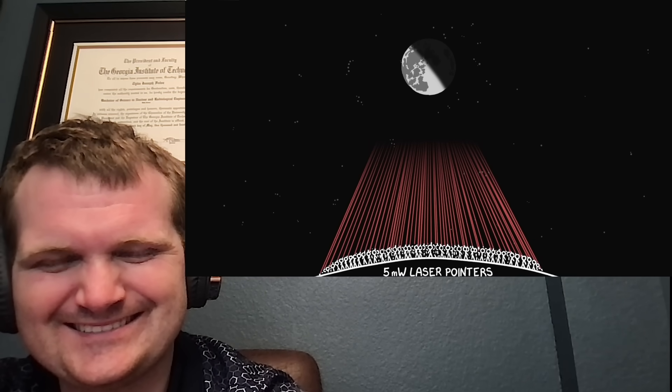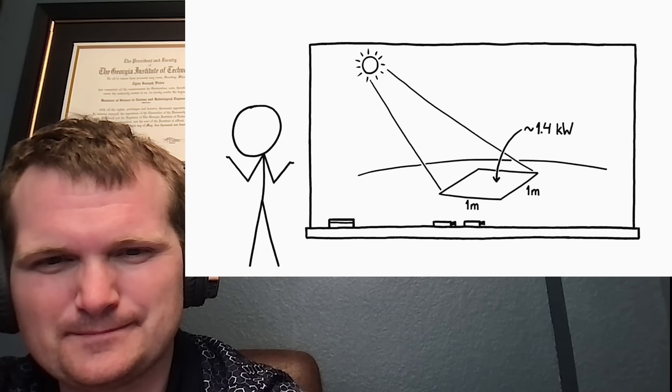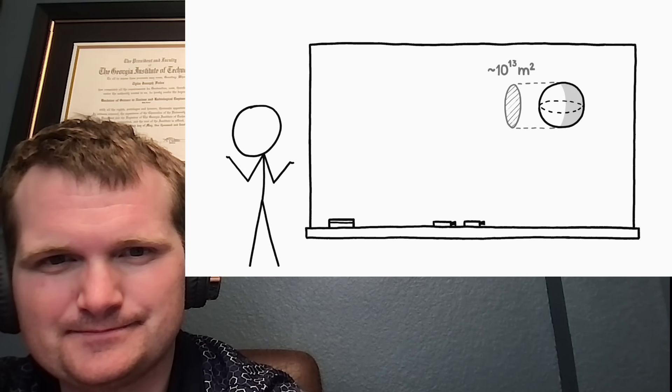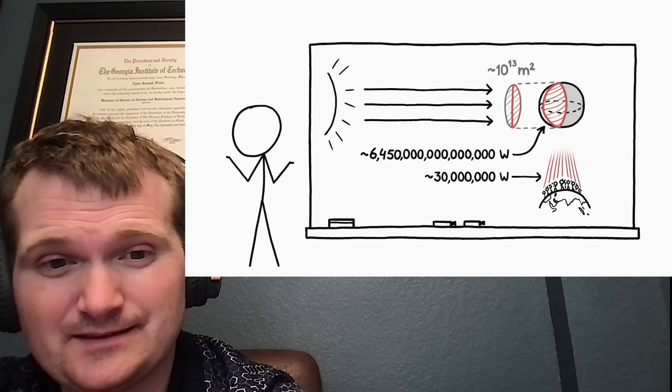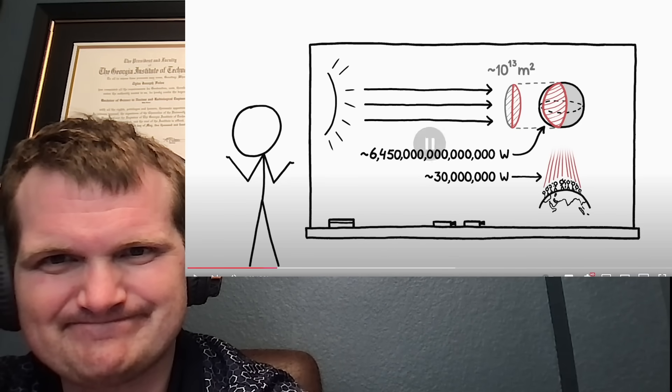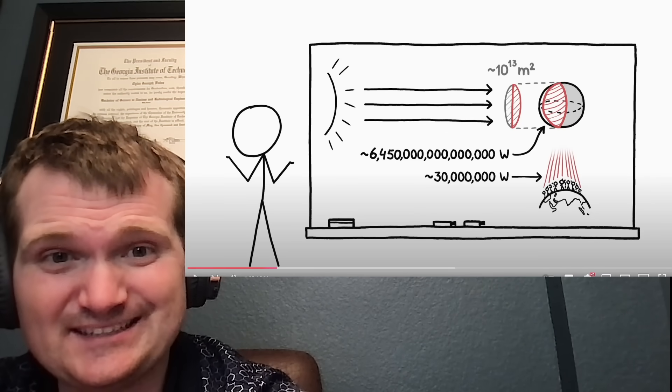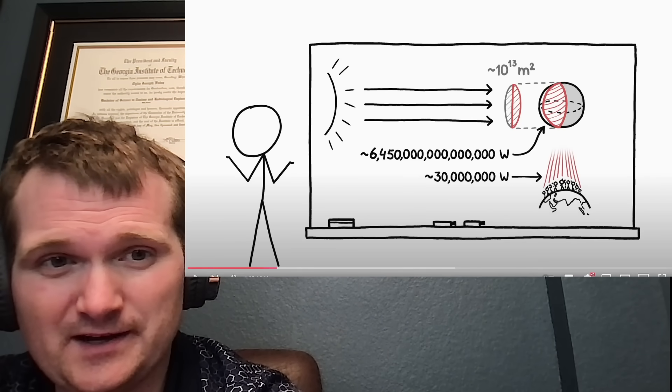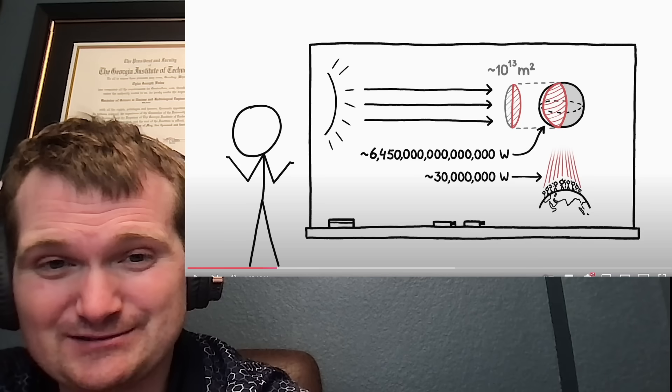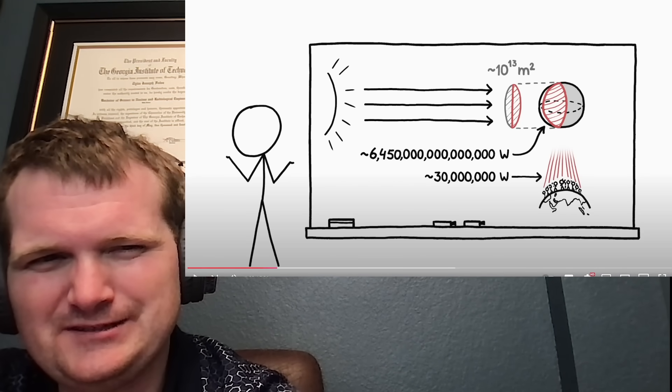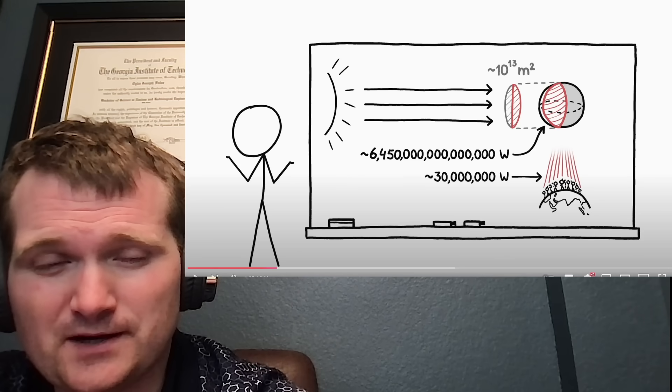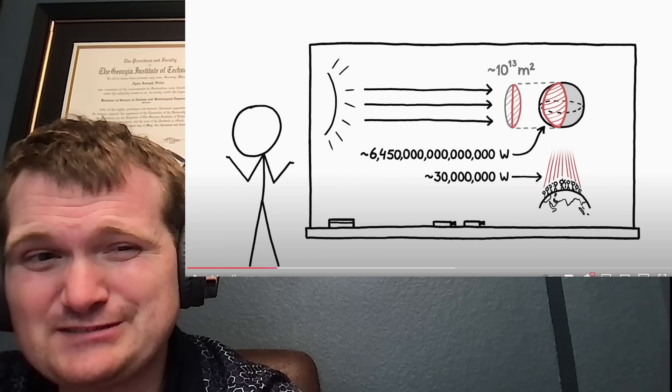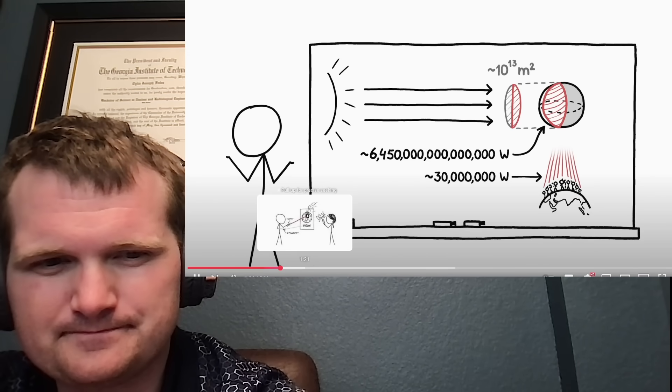Let's assume everyone has steady enough aim to hit the moon, and the light spreads out evenly across the surface. But this is what happens: Nothing. It makes sense though. Sunlight bathes the moon and Earth in a bit over a kilowatt of energy per square meter. Since the moon's cross-sectional area is about 10 trillion square meters, the bright half is bathed in about 6 petawatts of sunlight, while our planet-wide collection of 5 milliwatt lasers only adds up to about 30 megawatts of illumination, which is 200 million times weaker. The light's just going to spread out. The power density isn't there compared to the sun.